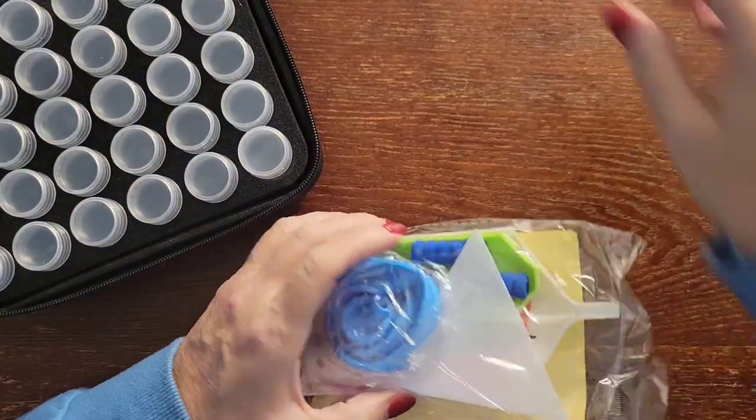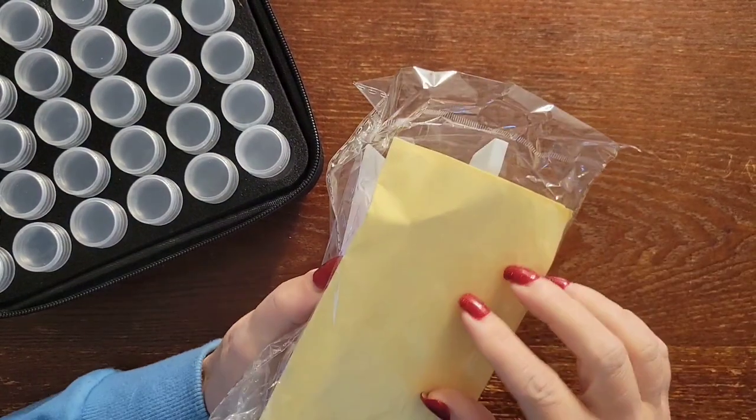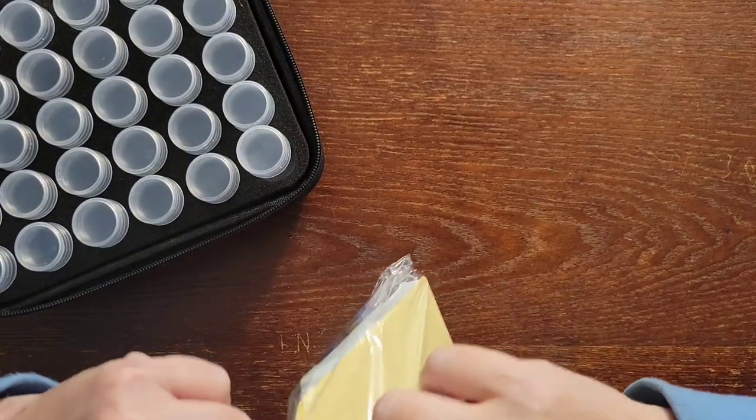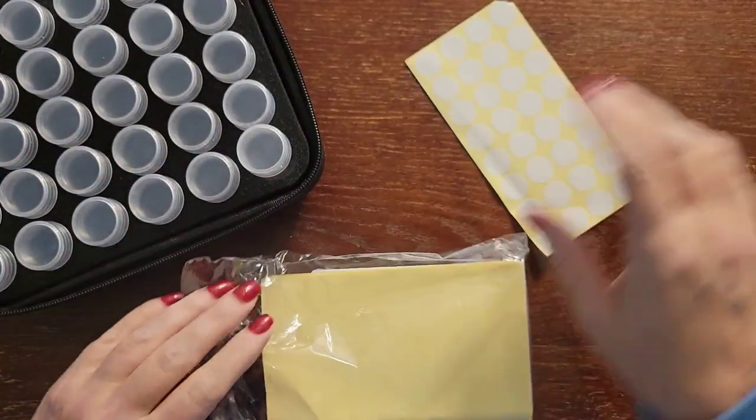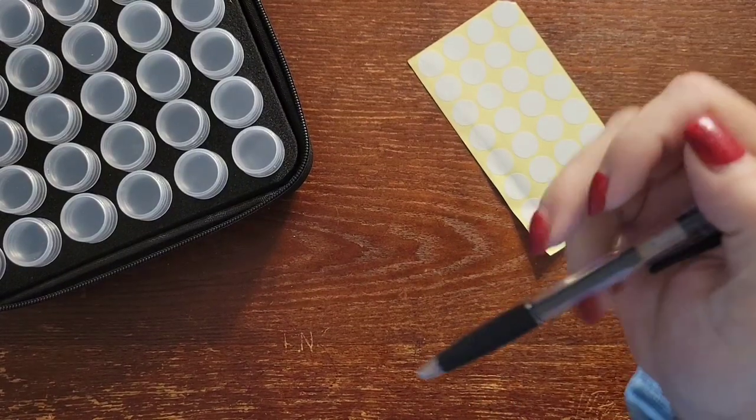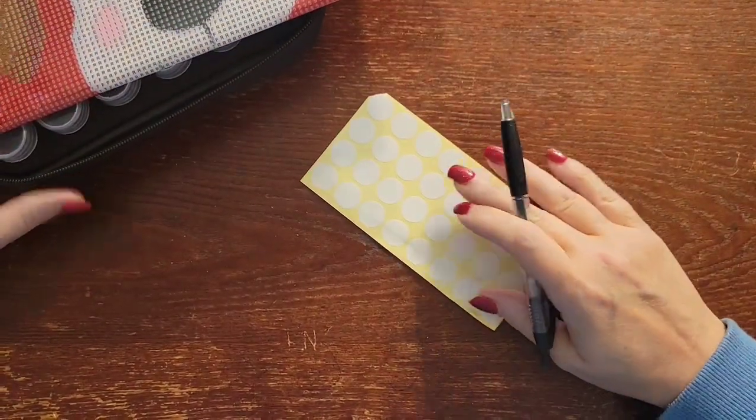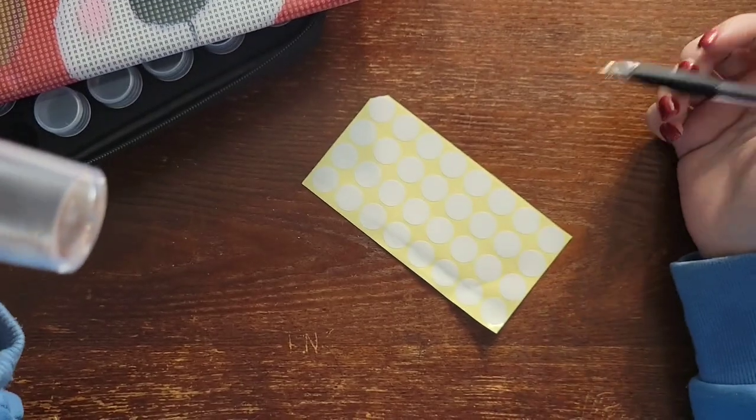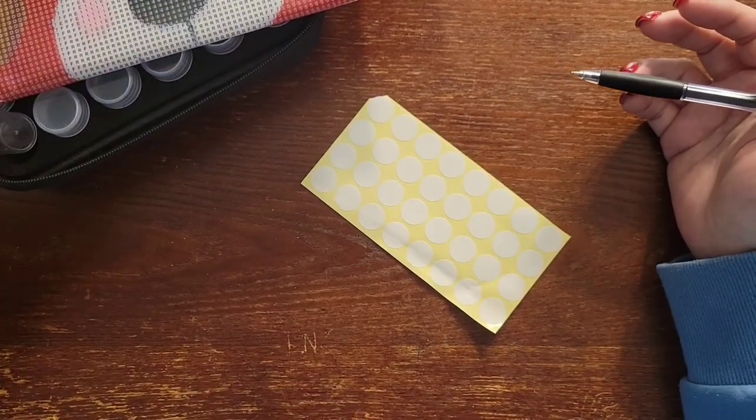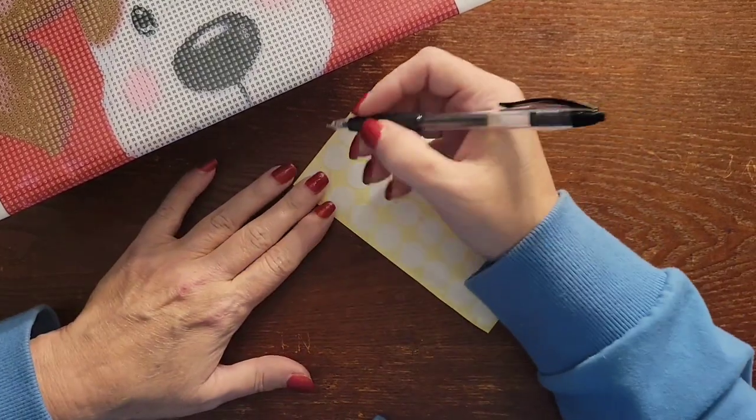I was going to see if I wanted to use these or my little round ones that came with this kit. Eight times four is thirty-two, there's plenty. Let's use these little round stickers. Now I normally would have made these ahead of time and put them on all of these containers, whatever you want to call them.